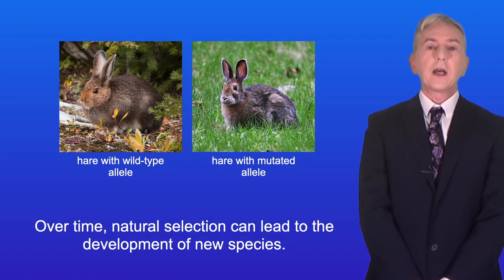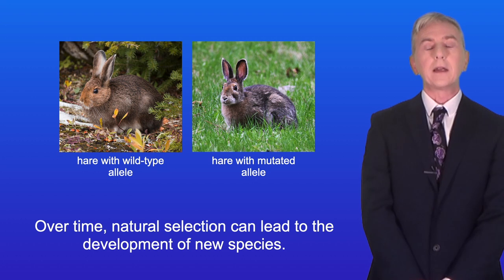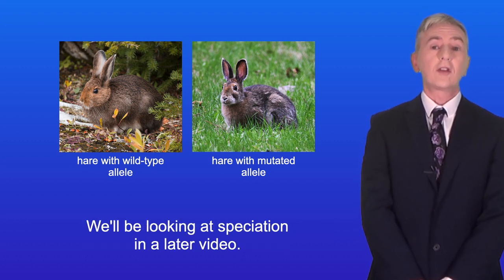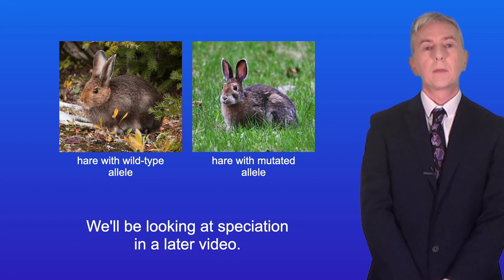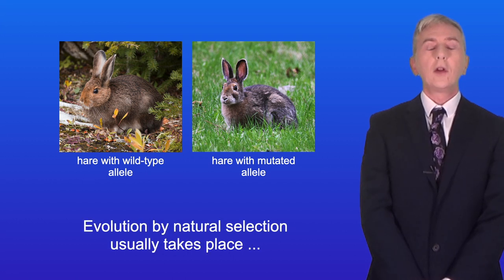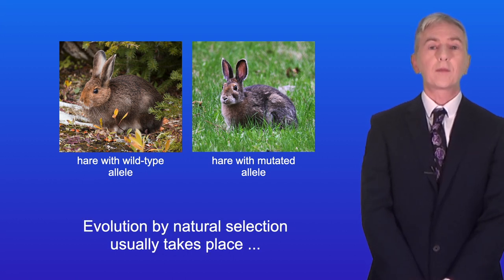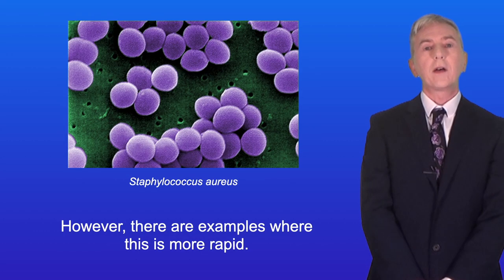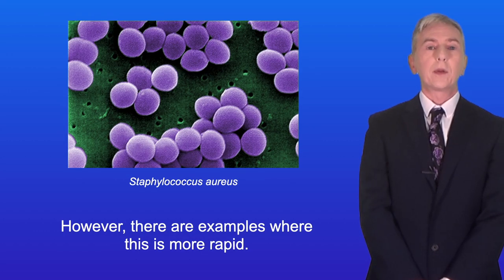Over time, natural selection can lead to the development of new species, and we'll be looking at speciation in a later video. Evolution by natural selection usually takes place over a very long time period. However, there are examples where this is more rapid.